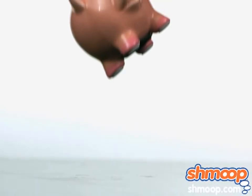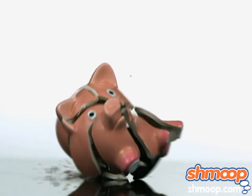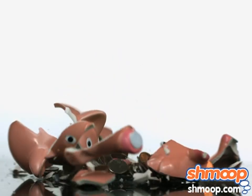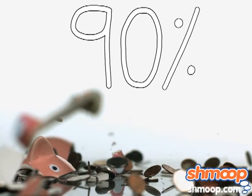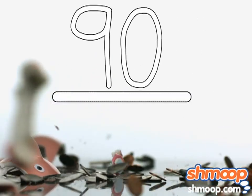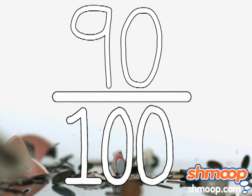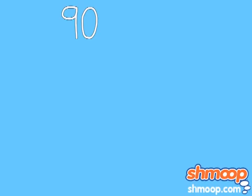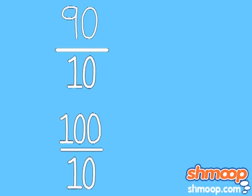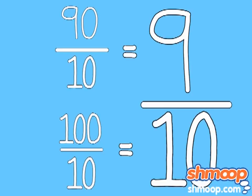Now let's turn it into a fraction. Since percent means per hundred, we know ninety percent is really ninety out of one hundred. We can reduce it to make everything nice and neat. Ninety and one hundred can both be divided by ten, giving us nine tenths.